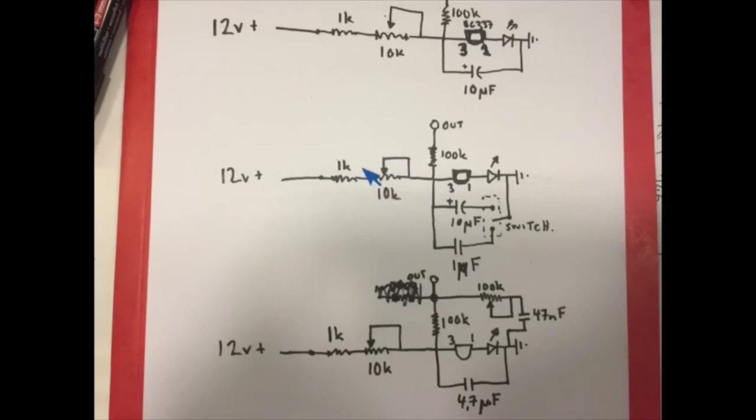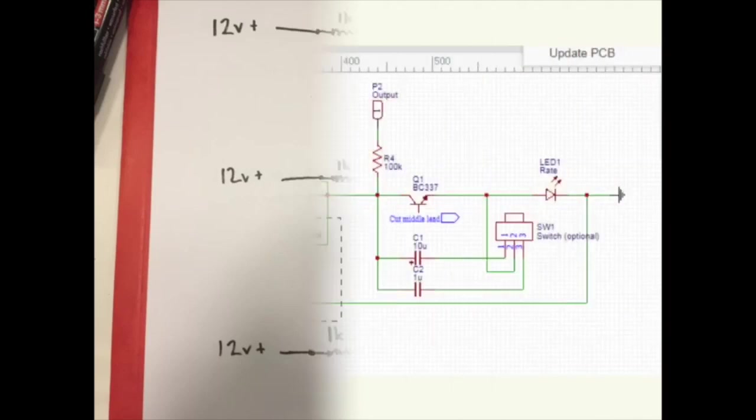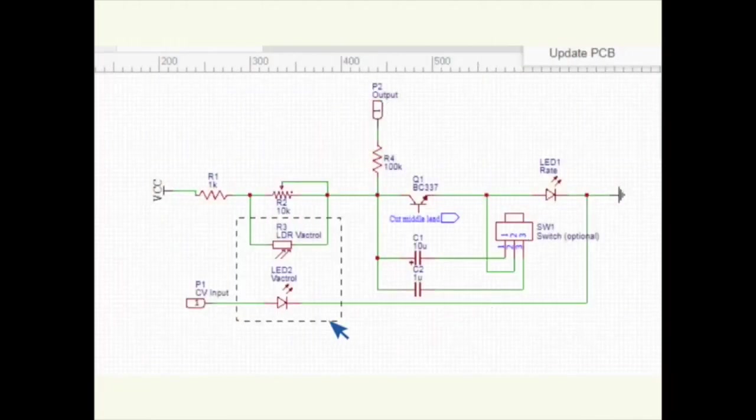So instead, when you have, when you only have resistance as the means to change the frequency or whatever value, then there is a circuit called a vactrol. Here's the schematics again. I drew it up in ECEDA, as I talked about in the last episode. So we can follow this a bit better.